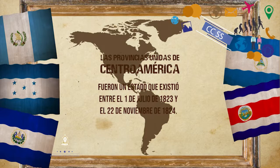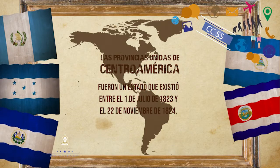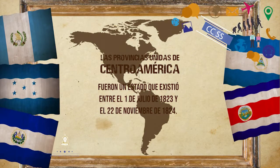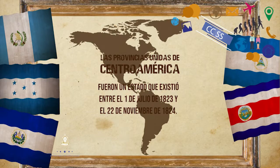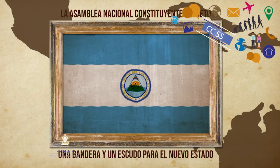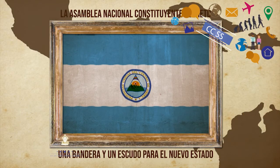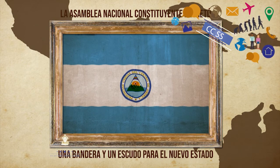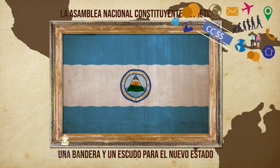Luego, el Congreso Constituyente se reunió en la ciudad de Guatemala con el objetivo de decidir cuál sería el sistema de gobierno a través del cual se regirían los nuevos destinos de la joven nación. La Asamblea Nacional Constituyente decretó una bandera y un escudo para el nuevo Estado y nombró una nueva Junta de Gobierno Provisional de tres miembros.